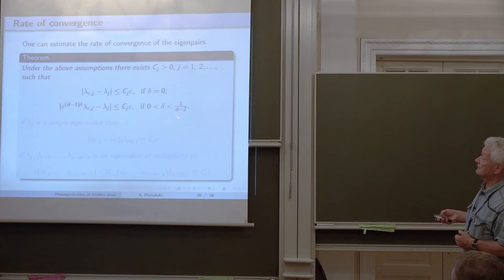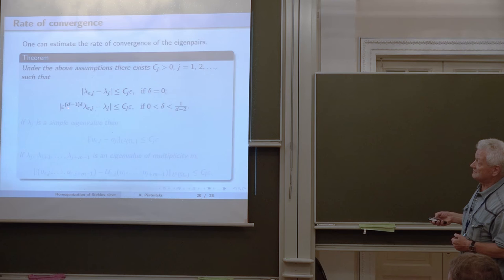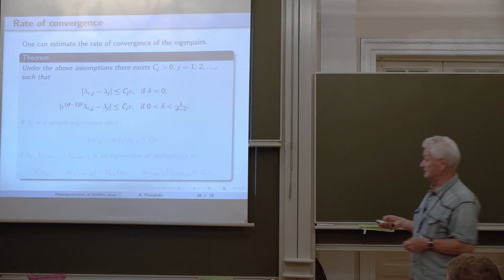This holds for delta equal to zero. For delta greater than zero with normalization, the difference between the renormalized eigenvalue and the limit one also does not exceed C j times epsilon in absolute value.